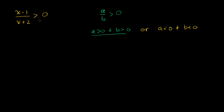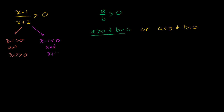So there are two situations to solve this problem. The first is where both of them are greater than 0: x minus 1 greater than 0 and x plus 2 greater than 0. If they're both greater than 0, when you divide them you get something greater than 0. The other option is if both of them are less than 0: x minus 1 less than 0 and x plus 2 less than 0. Then you have a negative divided by a negative, which is positive, which is greater than 0.